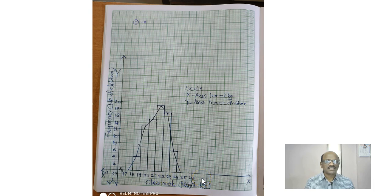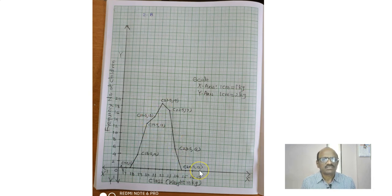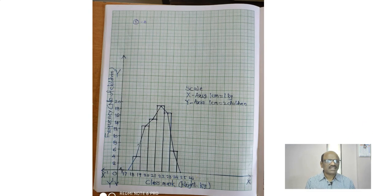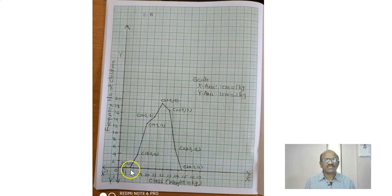Now see these classes — they are written as the same classes, with the class mark shown as the midpoint of each class. The class 17 to 18, 18 to 19 are written as usual, but the class mark, which is the midpoint, is plotted on the x-axis. In this way, the student will get a clear understanding that the x-axis shows the classes 17 to 18 onwards, and the class mark is the midpoint of that class. You can draw the frequency polygon with the help of the points more accurately.